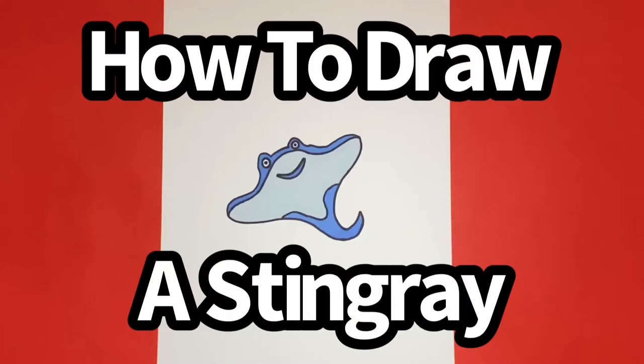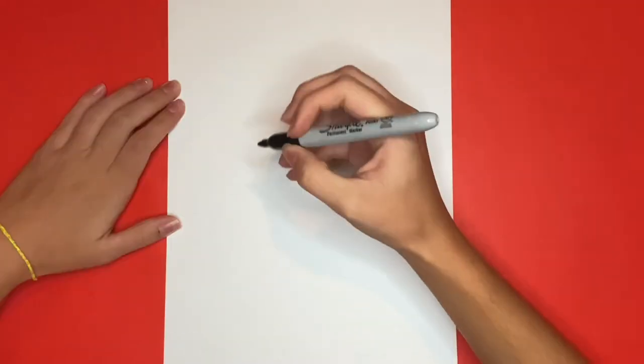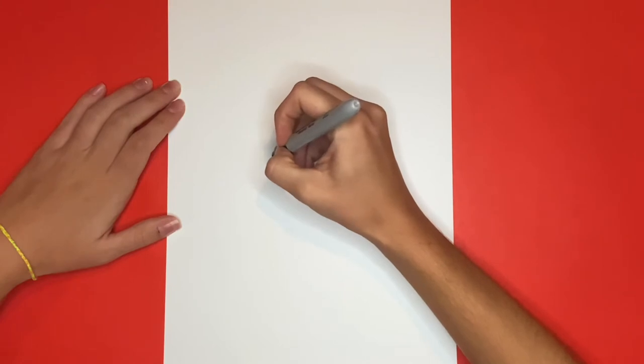How to draw a stingray. To begin we're going to draw two wavy lines.